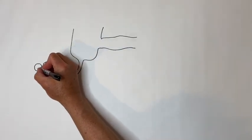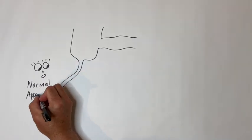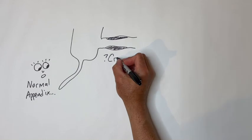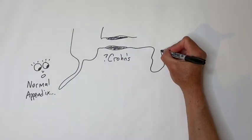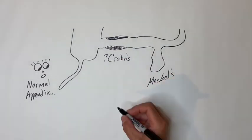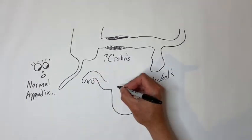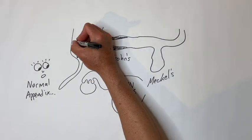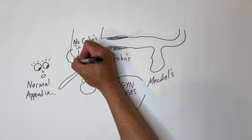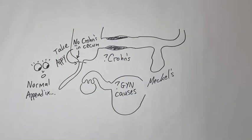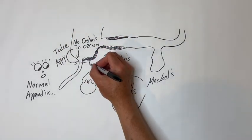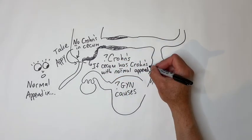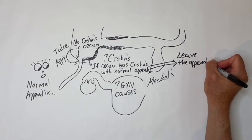If you explore for right lower quadrant pain and the appendix is normal, check for terminal ileum Crohn's disease. Also check for Meckel's diverticulum, which should be within two feet of the ileocecal valve, and check for GYN causes in a woman. If you find terminal ileum Crohn's disease that does not involve the cecum, remove the appendix. If Crohn's disease involves the base of the appendix but the appendix itself is normal, leave the appendix since removal has a high rate of fistula.